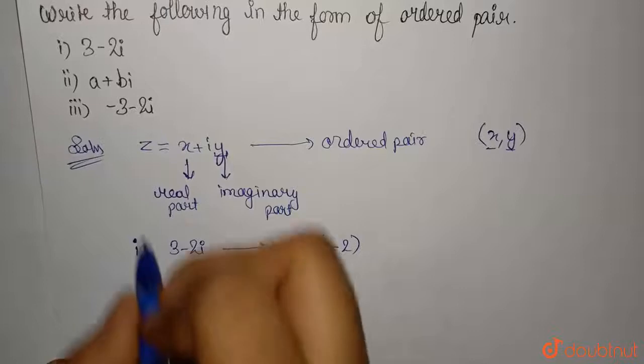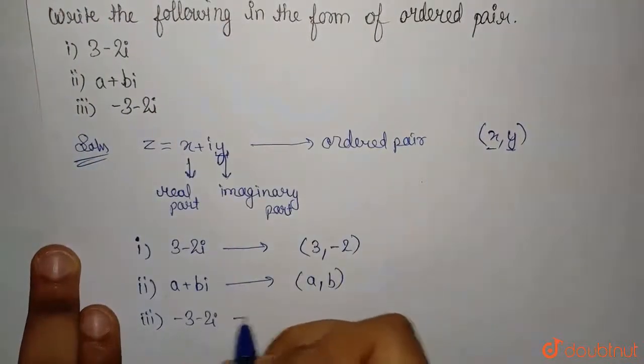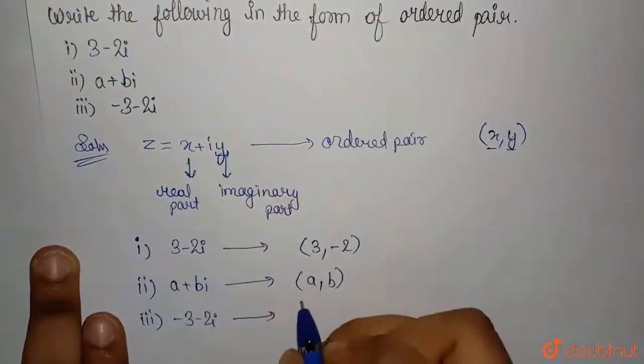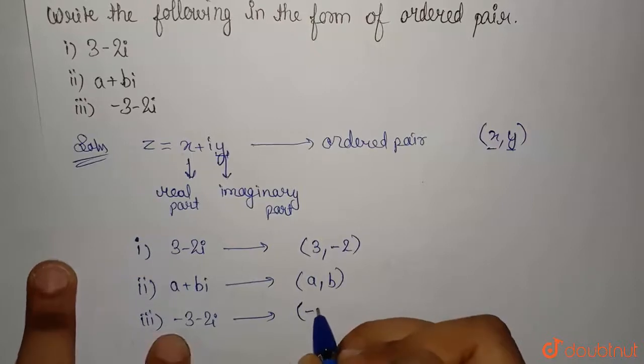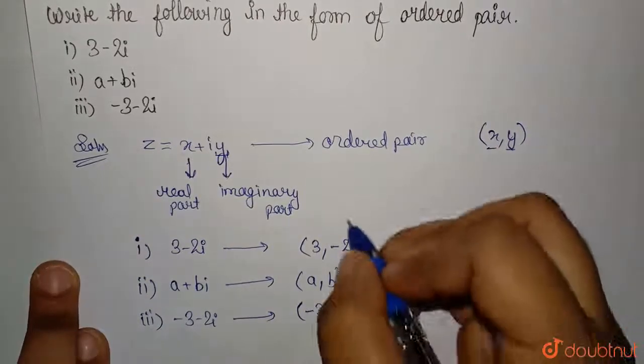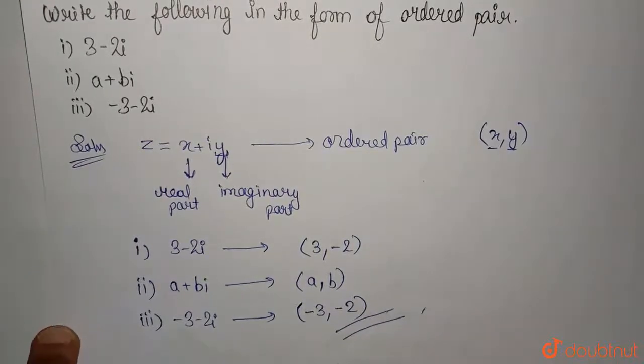Third is minus 3 minus 2i. Here also, if you compare, the value of x will be minus 3 and the value of y is minus 2. So in the ordered pair, it is minus 3 and minus 2. So you have written all the complex numbers in the form of ordered pairs. Thank you.